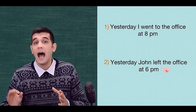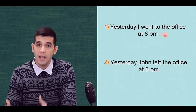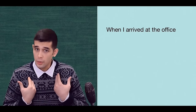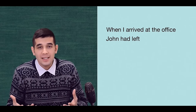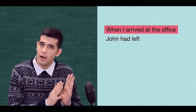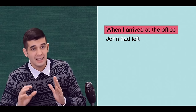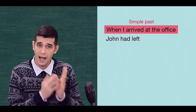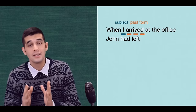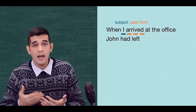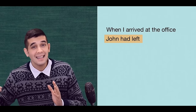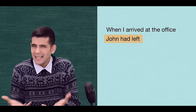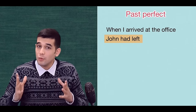John left the office at 6, then I arrived at the office at 8. Now, look at this sentence: 'When I arrived at the office, John had left.' The first part — 'When I arrived at the office' — is simple past: subject plus past form of the verb. The second part — 'John had left' — what is it? It's past perfect.